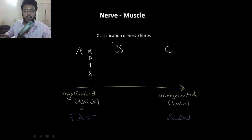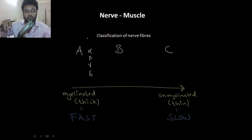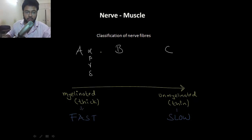Next is nerve muscle physiology. Let's begin with classification of nerve fibers. There are three main categories of nerve: A, B, and C. A has four subtypes: alpha, beta, gamma, and delta.